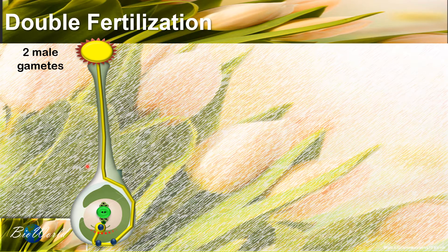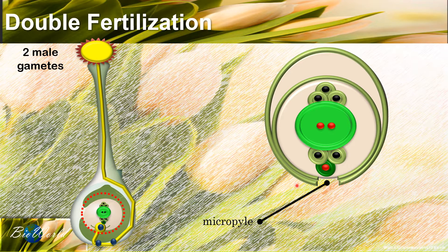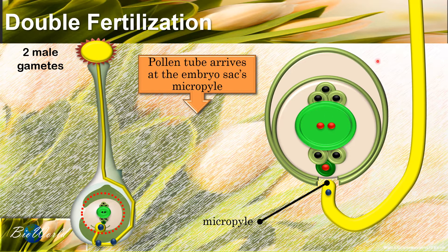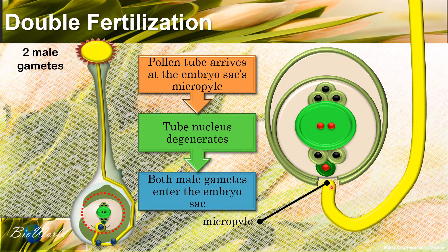Here you can see the pollen tube elongating all the way to the embryo sac, with the two male gametes following behind. The embryo sac has the eight nuclei and is enclosed within the ovule. There is an opening in the embryo sac called the micropyle, so the pollen tube will actually grow towards the micropyle. Once it has arrived at the micropyle, the tube nucleus will degenerate, signalling the male gametes to travel into the embryo sac.